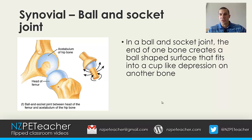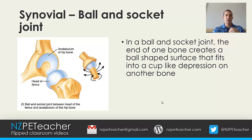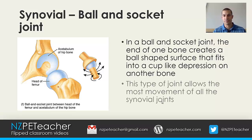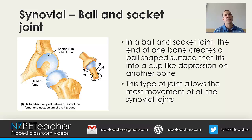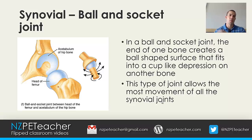In a ball and socket joint, the end of one bone creates a ball-shaped surface that fits into a cup-like depression on another bone, called the acetabulum. This type of joint allows the most movement of all the synovial joints, which is basically the reason why you see so many shoulder injuries — because the shoulder is a ball and socket joint.